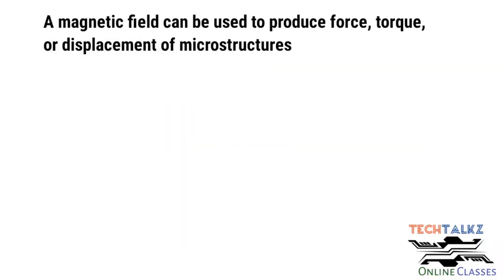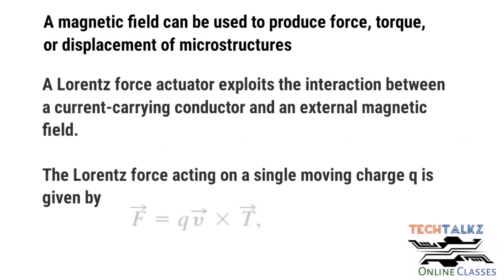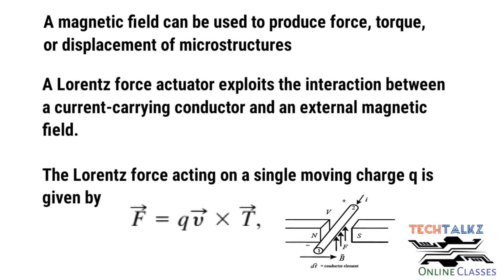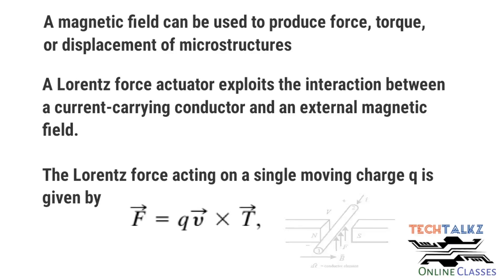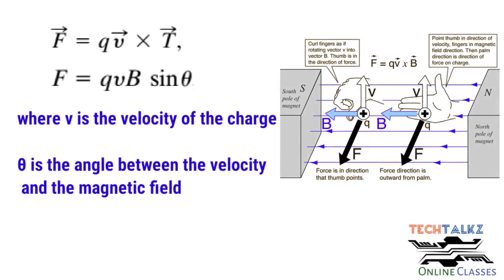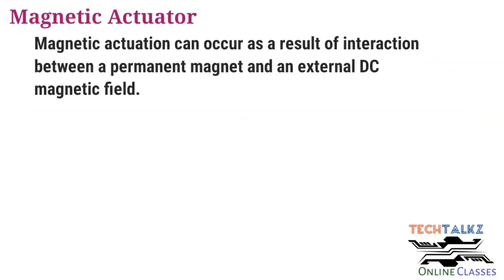A magnetic field can be used to produce force, torque, or displacement of microstructures. The Lorentz force actuator uses the interaction between a current-carrying conductor and an external magnetic field. The Lorentz force for a single moving charge q has magnitude qvB sin(theta), where v is the velocity of the charged particle and theta is the angle between the velocity and the magnetic field. Magnetic actuation can also occur as a result of interaction between a permanent magnet and an external DC magnetic field. One typical example is the magnetic compass.